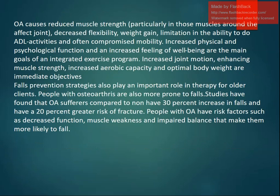OA causes reduced muscle strength in muscles around the affected joint, decreased flexibility, weight gain, and limited ability to perform activities of daily living. Increased physical and psychological function and well-being are the main goals of an integrated rehabilitation program. Increasing joint motion, enhancing muscle strength, increasing aerobic capacity, and achieving optimal body weight are immediate objectives. Fall prevention strategies are very important, as people with OA have a 30 percent increase in falls and a 20 percent greater risk of fractures.